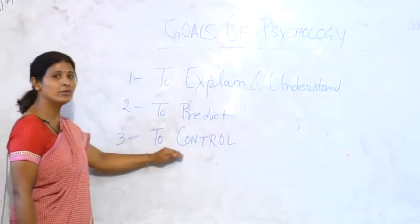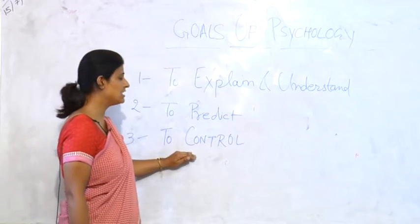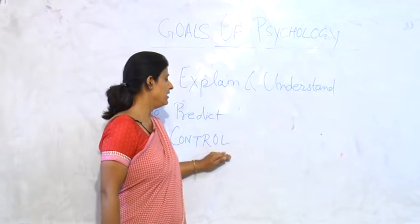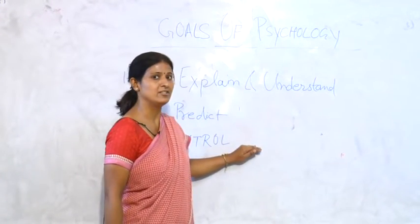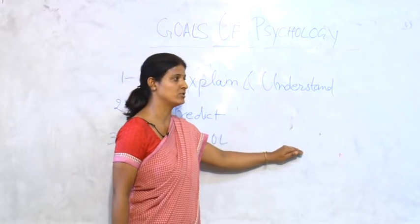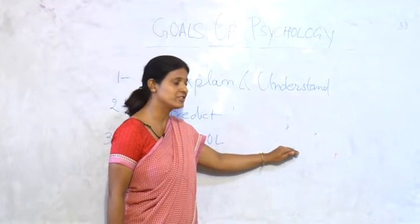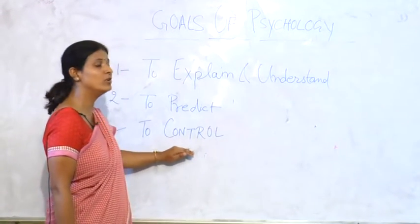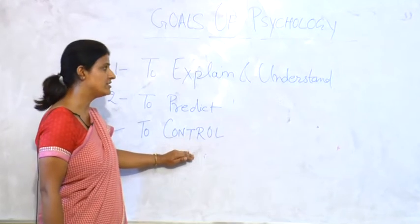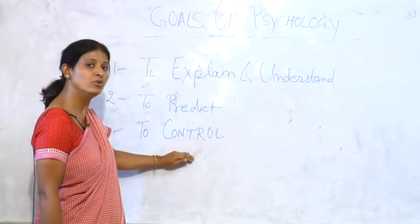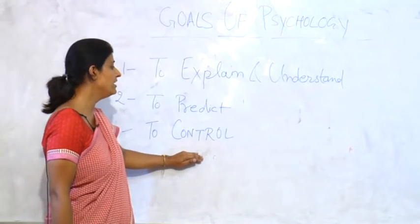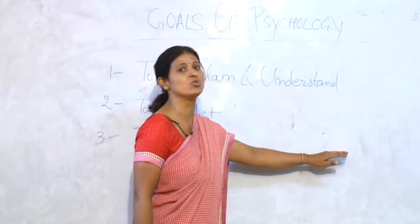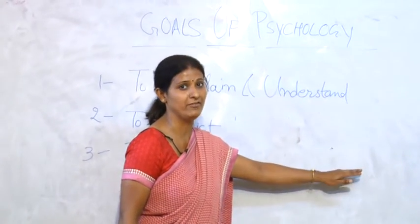Third is to control. Some of our behaviors are very disadvantageous for society and for the self. These behaviors can be controlled through the study of human behavior. These types of behavior include our anti-social behaviors.